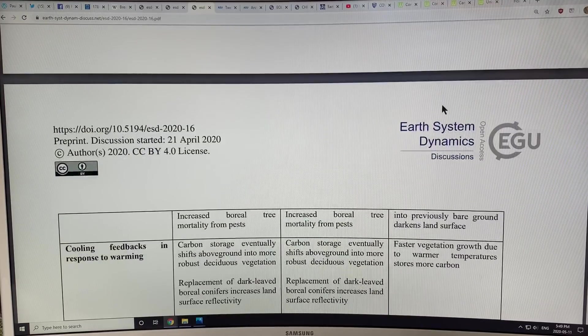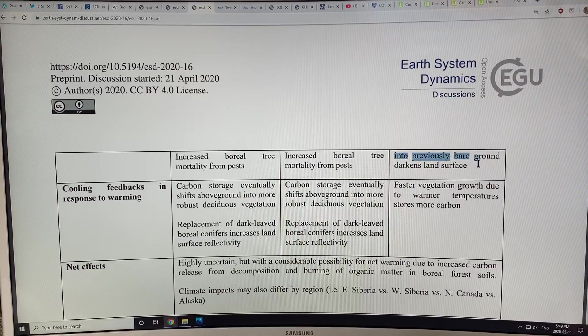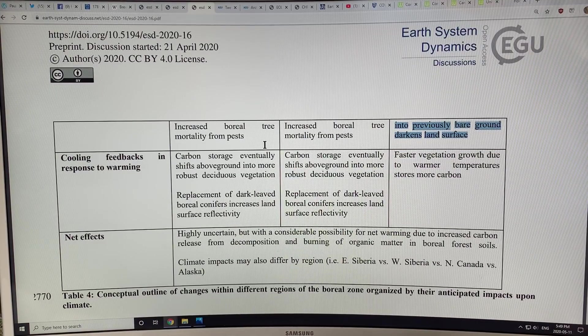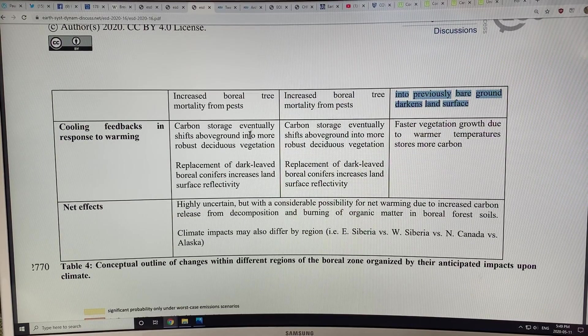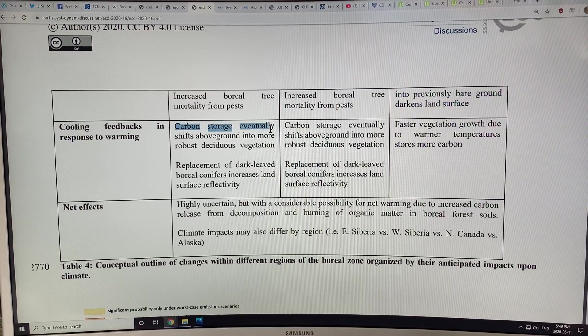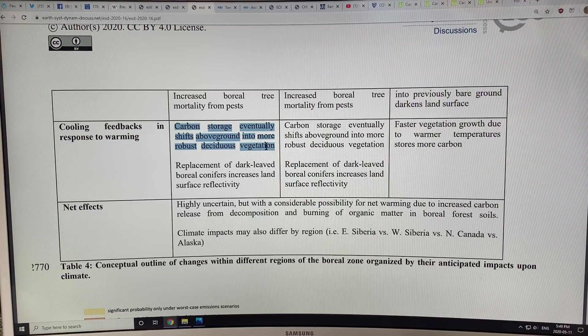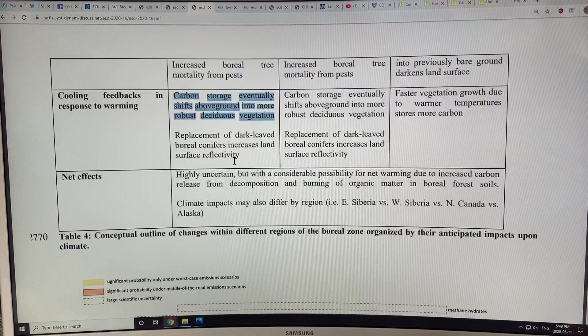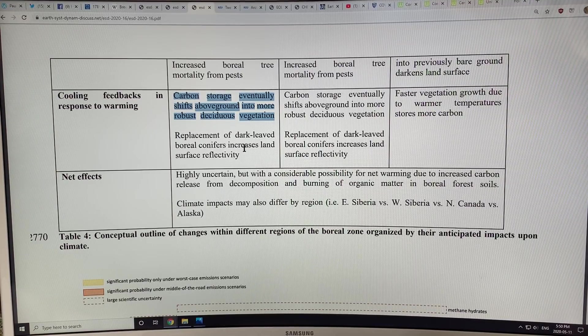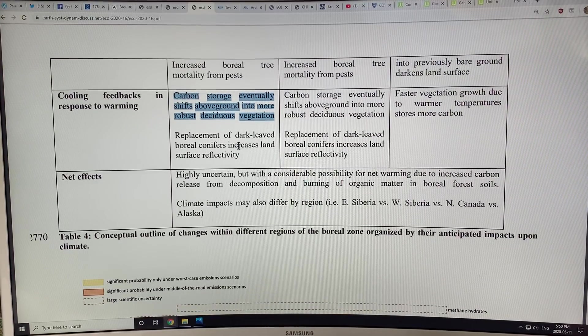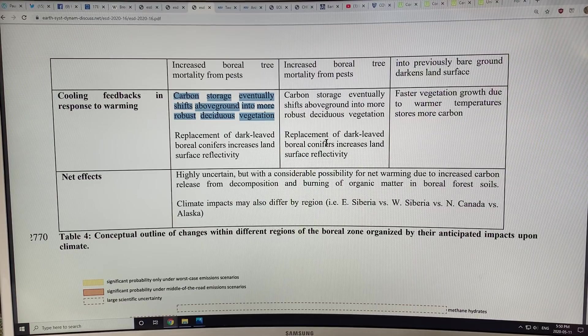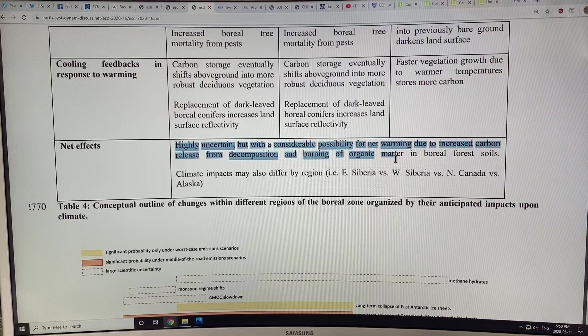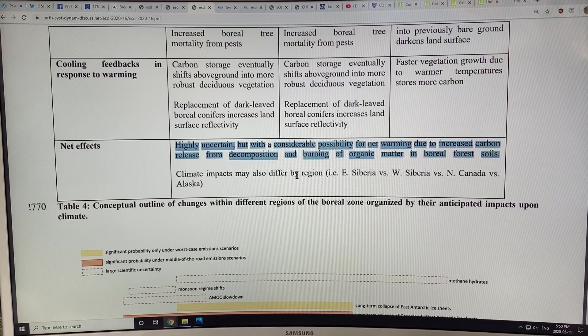In the northern margins, the boreal conifers are expanding and growing further north on previously light snow-covered surfaces, so they darken the surface. As we get warming, there's more pests attacking the trees, which exposes them more to wildfires. The carbon storage eventually shifts above ground into more robust deciduous vegetation. As we get less fir trees and pine trees, the dark boreal conifers, then we get deciduous trees coming in and grasslands. The reflectivity actually changes the whole albedo of the region. This can cause a tipping point.